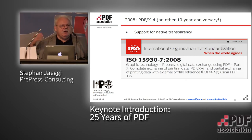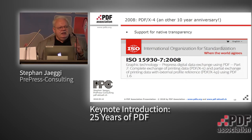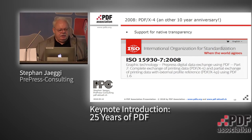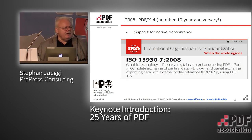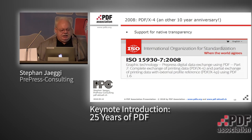In the meantime, technology developed: PDF 1.4 brought transparency, 1.5 brought layers, and 1.6 brought JPEG 2000 compression and OpenType fonts. That meant PDF/X-1a and X-3, still based on PDF 1.3, could not cover all the new things possible in layout applications like Illustrator or InDesign. So the ISO committee decided we needed a new variant of PDF/X — PDF/X-4 — which was released 10 years ago in 2008, another anniversary to celebrate tonight.